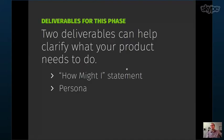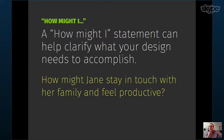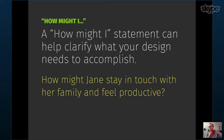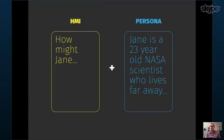Once those things are figured out, two deliverables help clarify what the product needs to do: a 'How Might I' statement — a starting point for defining what the design should accomplish — and a persona, which work in tandem. For example: 'How might Jane stay in touch with her family and feel productive?' — here, experience goals are already built into the statement. The persona then needs to amplify and clarify who Jane is in relation to how she uses the product.